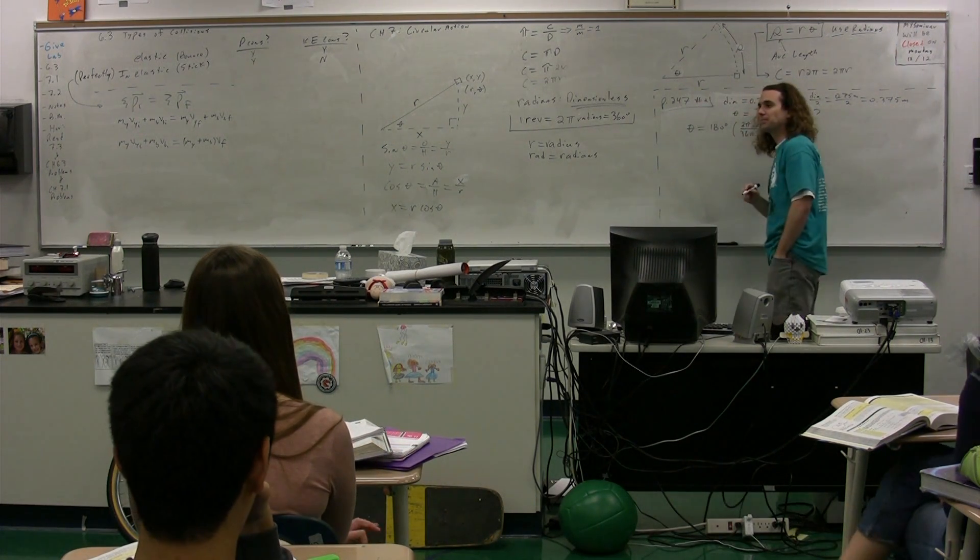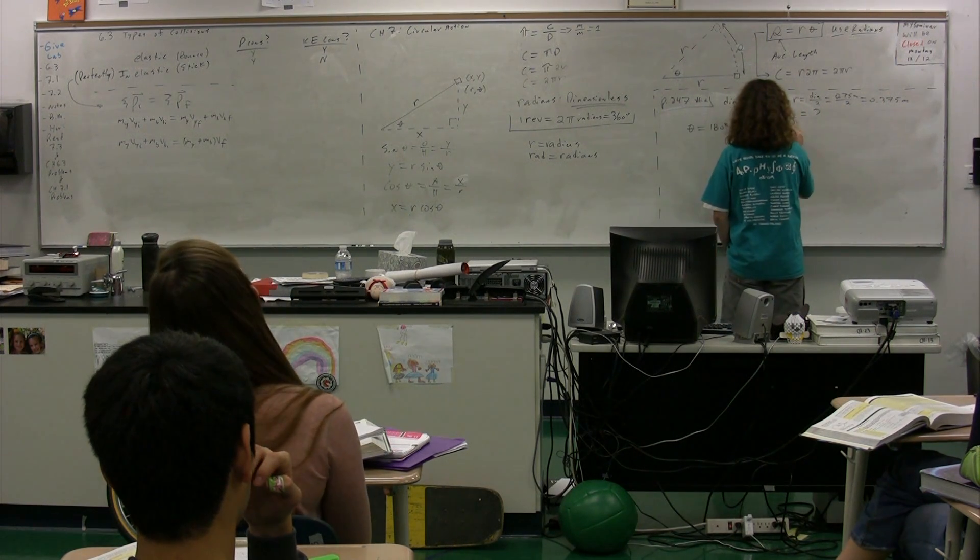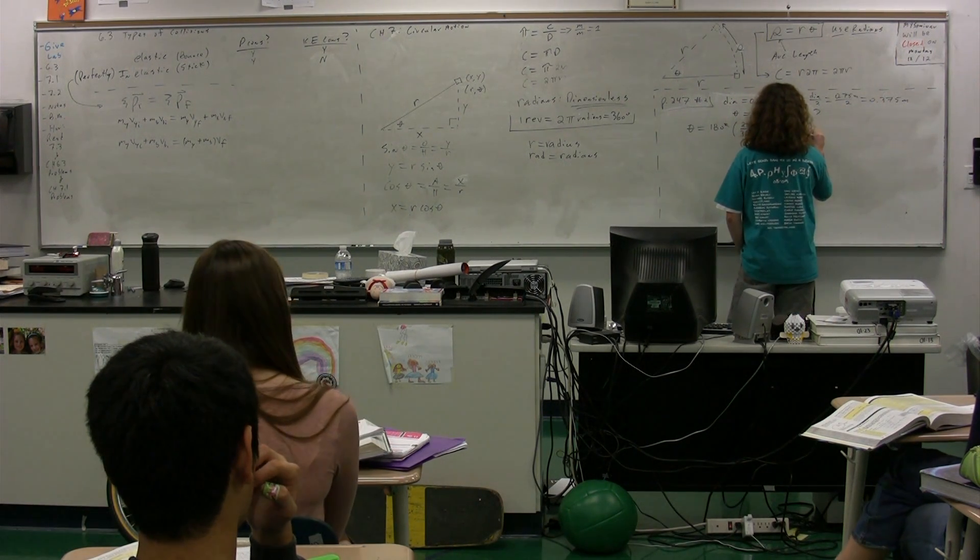But 361. Degrees. We need to make sure we have all of our degrees there. So, clearly, it works out to be pi radians. Good.